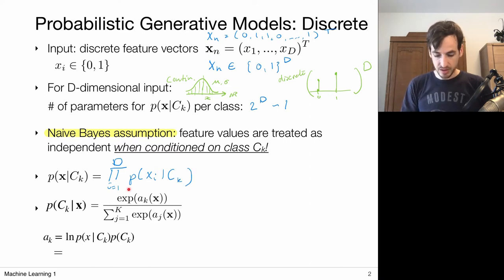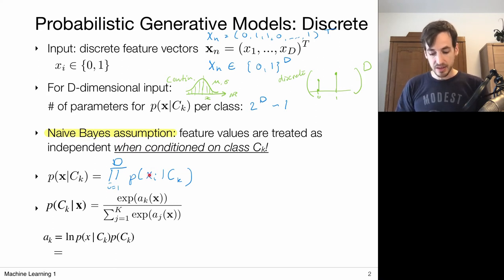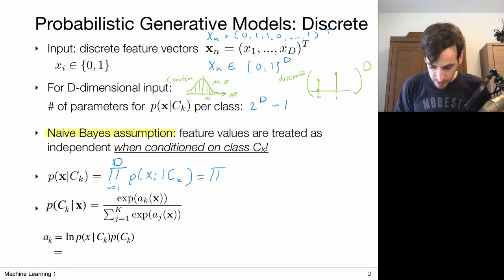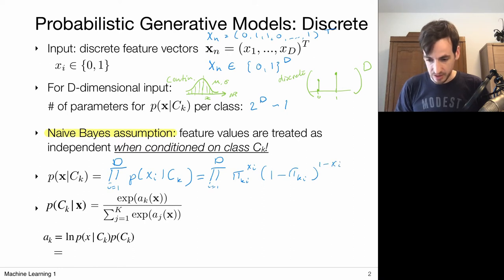When the components of X are independent given the class, we can make this factorization. In this particular case, this is the probability that x_i takes on either the value 0 or 1 given my class — so it's a binary random variable, and we can model this with a Bernoulli distribution. So we have the product over all components of: π_{ki}^{x_i} · (1 - π_{ki})^{1 - x_i}.